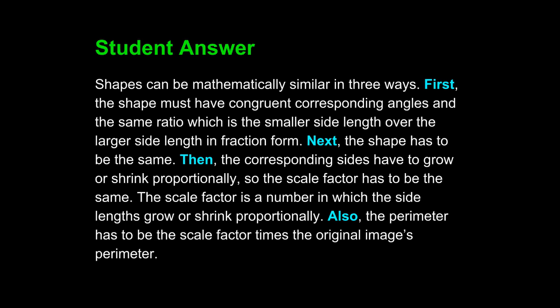Let's ignore the mathematical accuracy of this paragraph for a moment and take a look at the transition language. First, next, then, and also join each sentence into a whole. The paragraph flows. The writer has shown the reader the relationship among all the different sentences. This is strong writing.